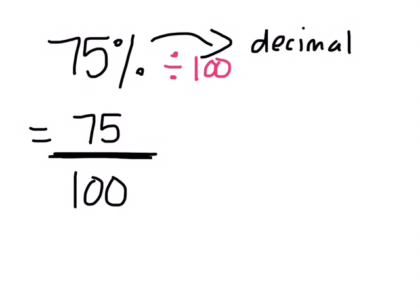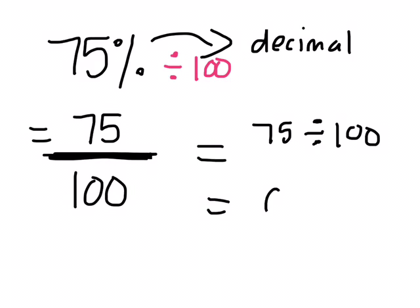Whenever you have a fraction, to turn that into a decimal, you take the numerator, so 75, and you divide it by the denominator. So if you have a calculator, take it out. 75 divided by 100, and we'll get zero decimal 75.